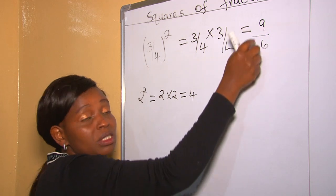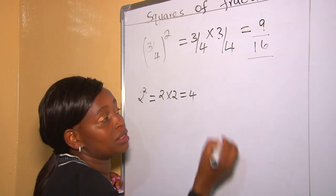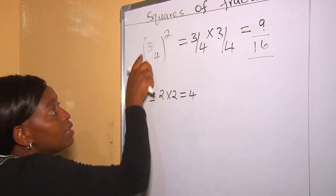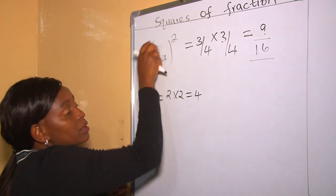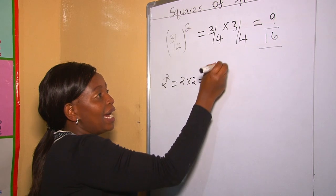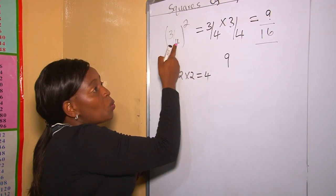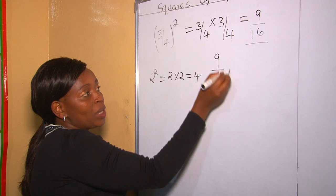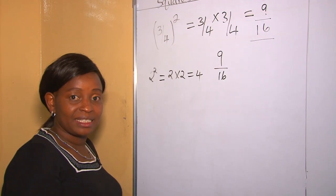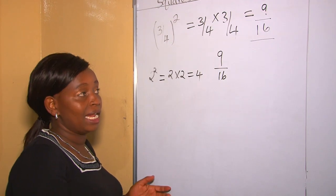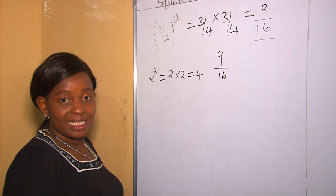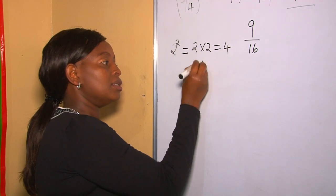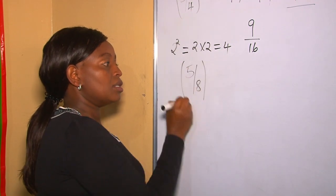We can't simplify because nine is an odd number and 16 is an even number — they don't have a common divisor, so we leave our answer like that. You can also square the numerator and denominator separately: three squared is nine and four squared is 16, and write your answer straight away. Let's do another question: five over eight, all squared.